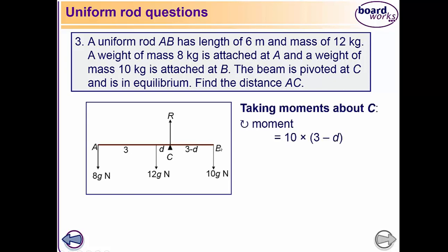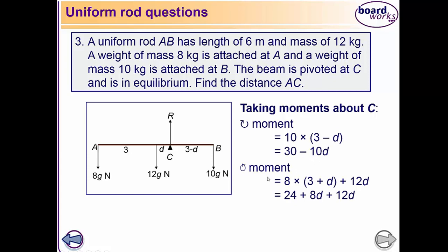Taking moments about C: the clockwise moment is 10g times (3 minus d). The anticlockwise moments are 8g times (3 plus d) plus 12g times d, which equals 24g plus 8gd plus 12gd, giving 24g plus 20gd. Setting clockwise equal to anticlockwise: 30g minus 10gd equals 24g plus 20gd. Solving: 6g equals 30gd, so d equals 0.2 meters.